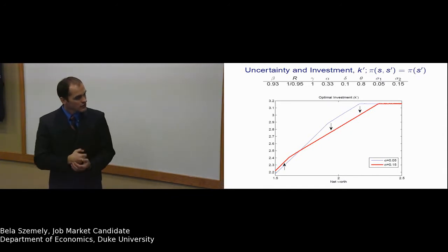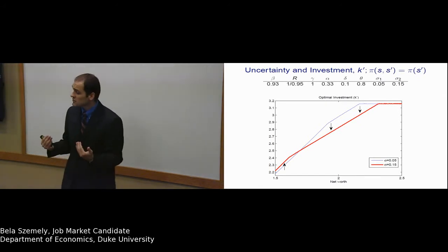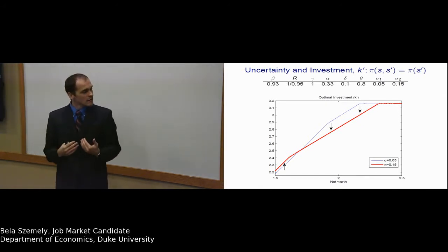However, when the level of net worth is in the intermediary range, that is when some collateral constraints do not bind, I get that upon an increase in uncertainty, firms are actually going to invest less. They are going to scale down their production.